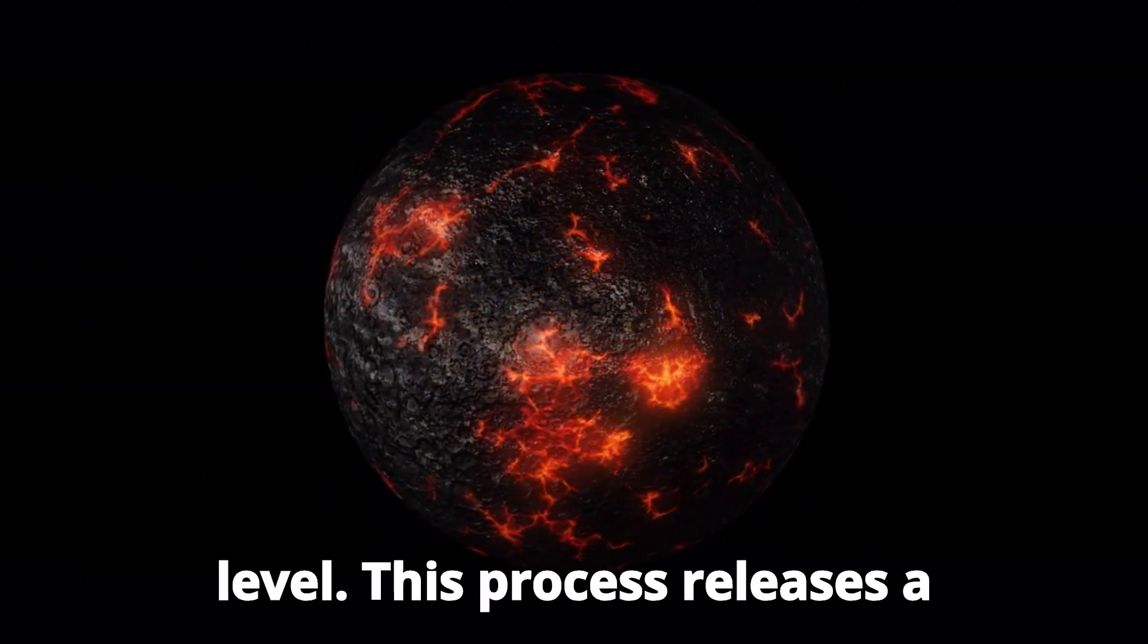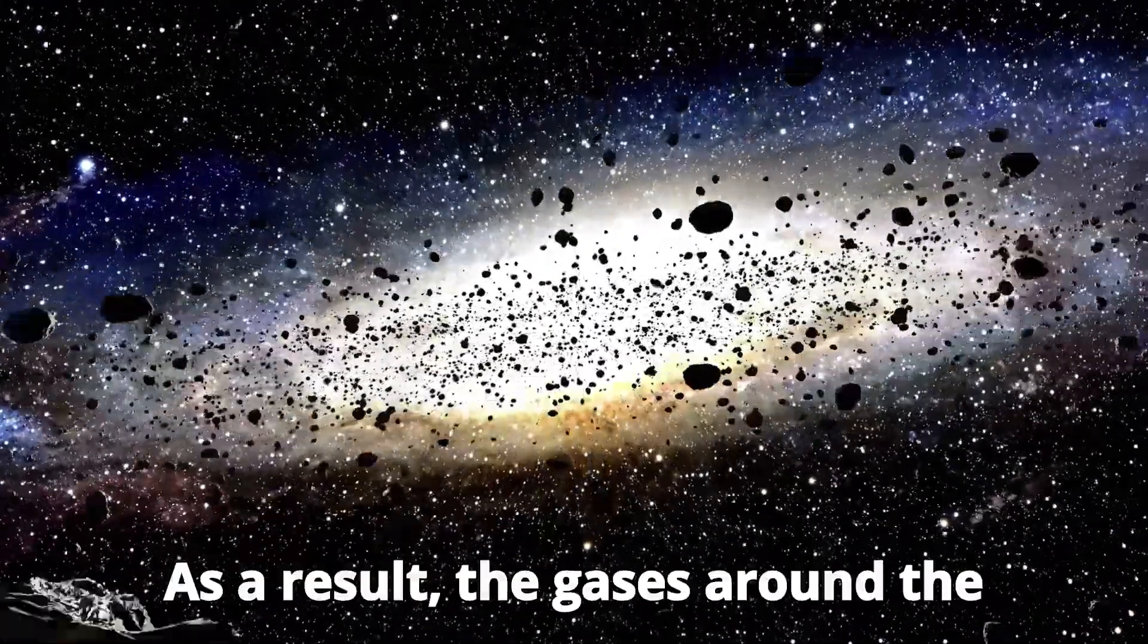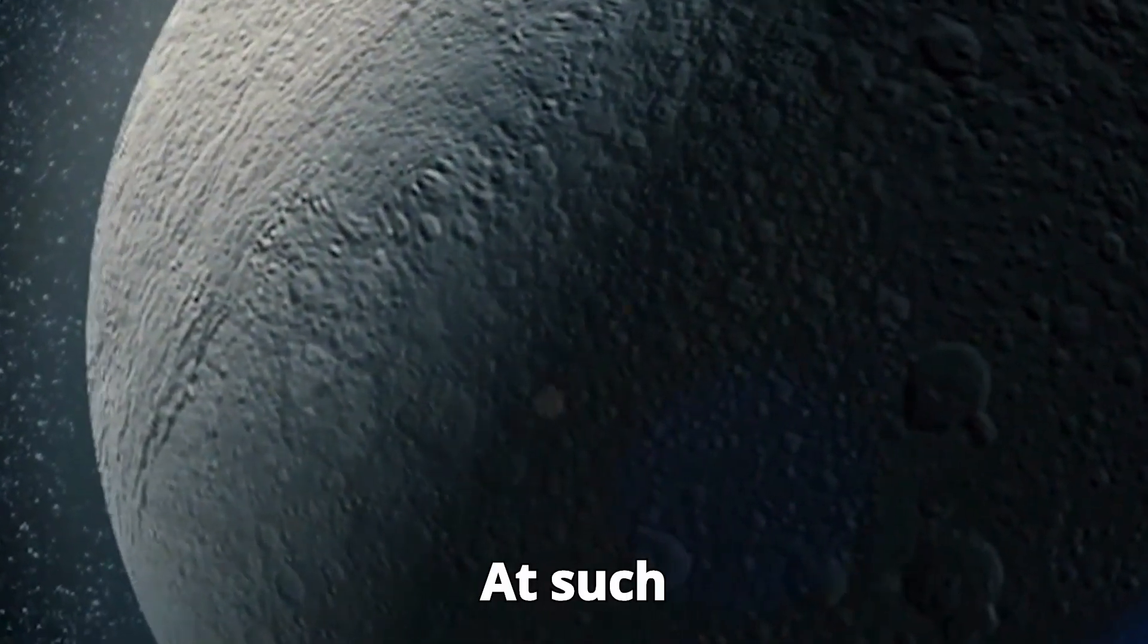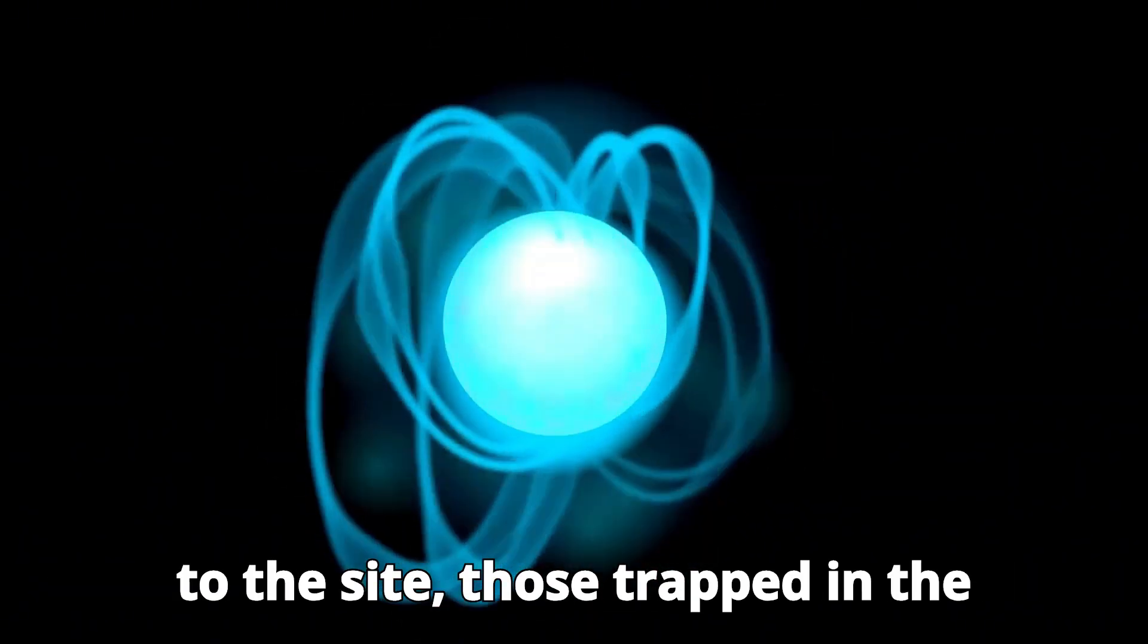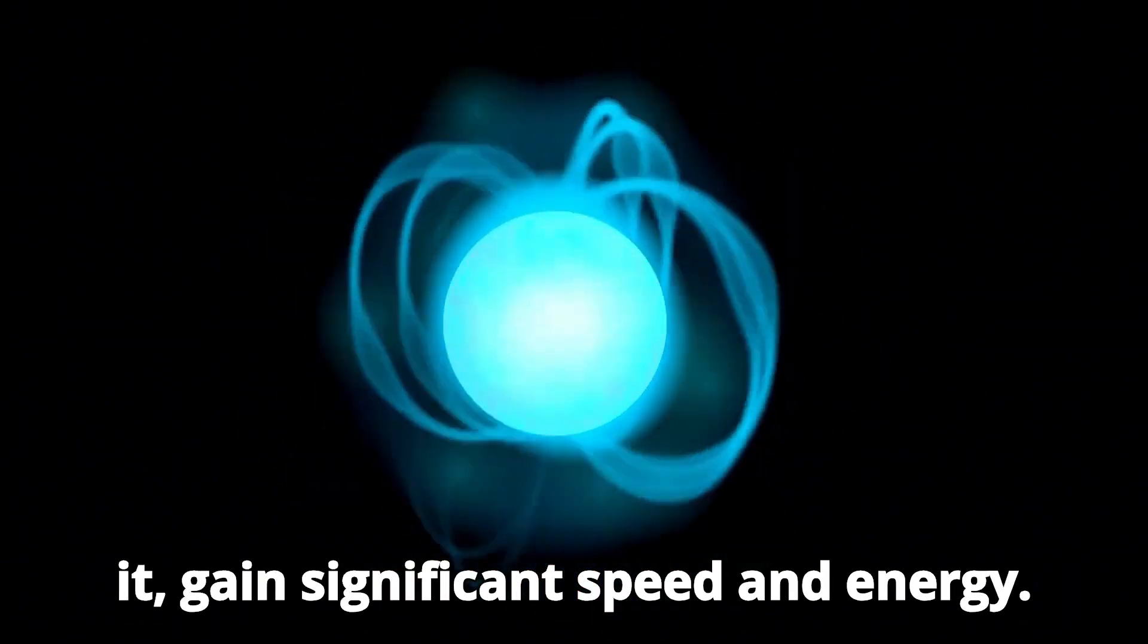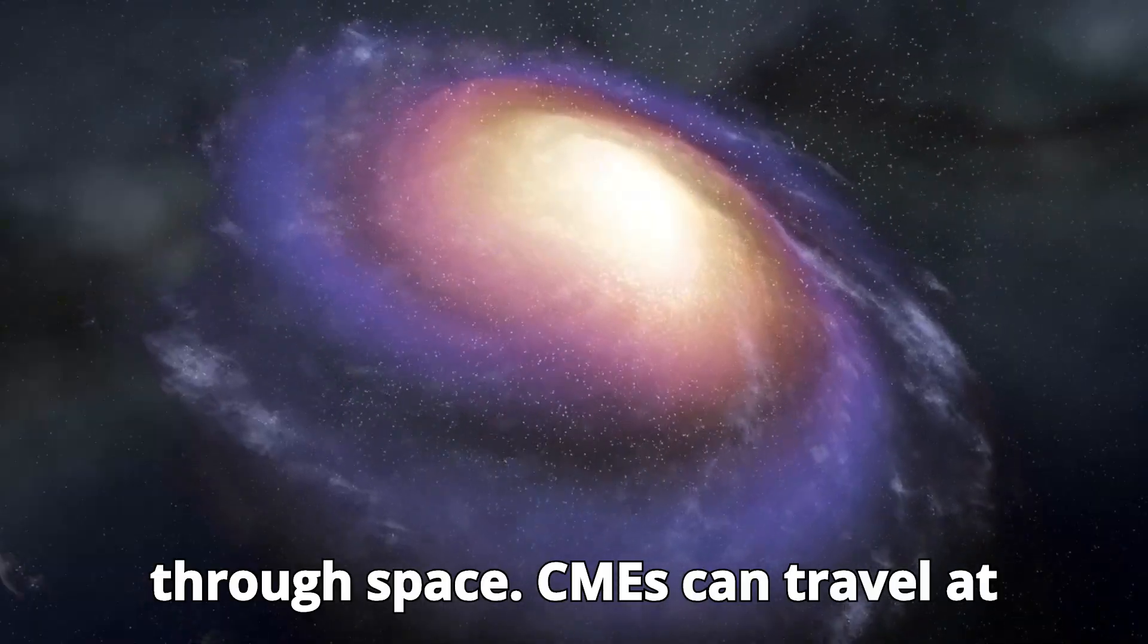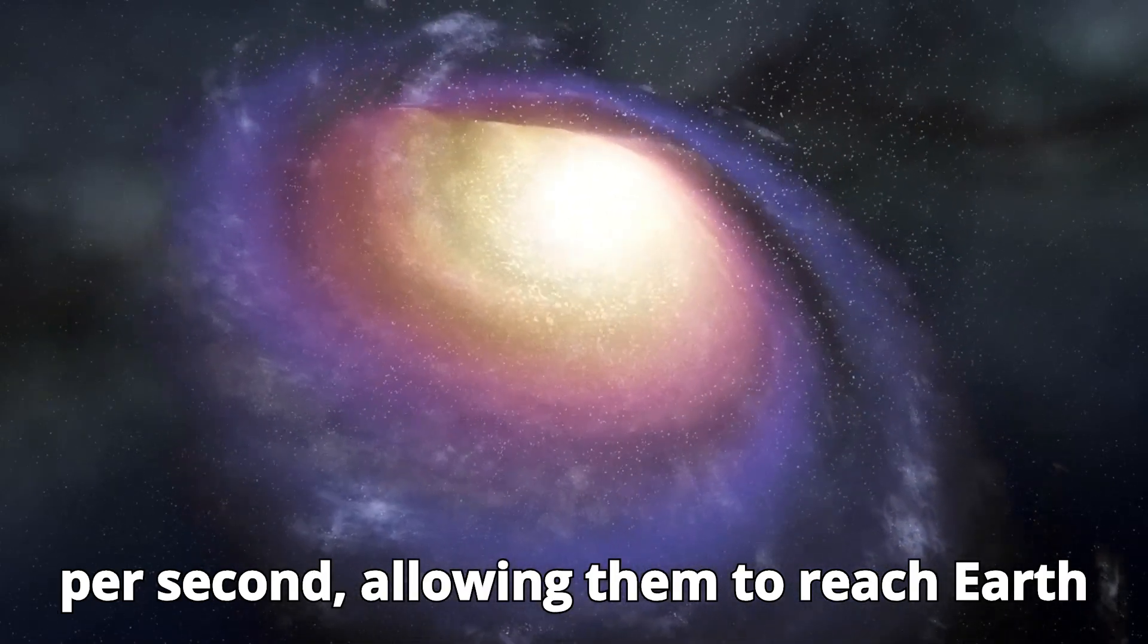As a result, the gases around the reconnection site become intensely heated, reaching temperatures of around 36 million degrees Fahrenheit, 20 million degrees Celsius. At such extreme temperatures, the particles close to the site, those trapped in the isolated loop of the magnetic field above it, gain significant speed and energy. This results in the formation of an enormous bubble of hot gas that escapes the sun's gravitational pole and races through space. CMEs can travel at incredible speeds of hundreds of miles per second, allowing them to reach Earth in less than a day.